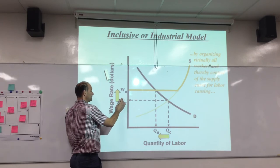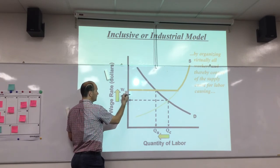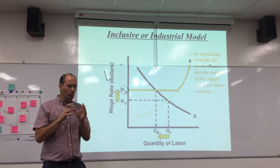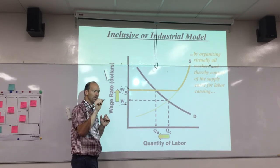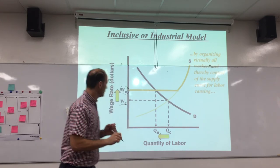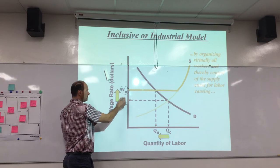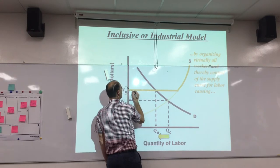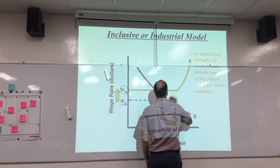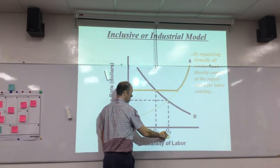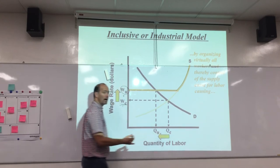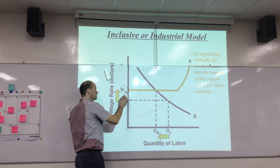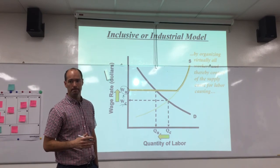Eventually, what should happen if it works for the union is that a wage W sub U is negotiated, which is greater than the wage that would prevail if each worker negotiated individually. With the union, you get a higher wage — everyone gets paid that wage, so this becomes your supply curve. The wage goes up, and the other effect is that the quantity of labor hired goes down. So the business will hire fewer people, but the people who keep their jobs will get paid more.